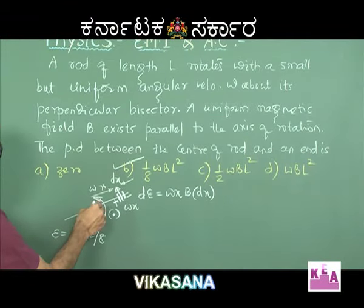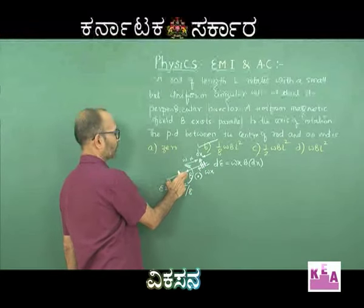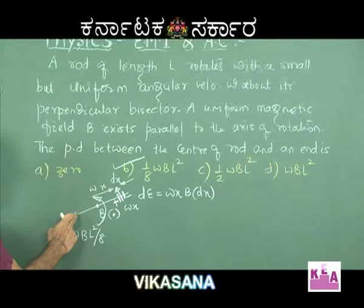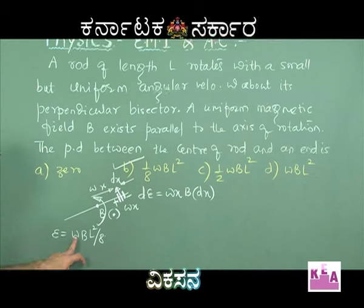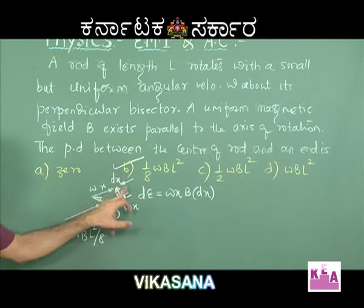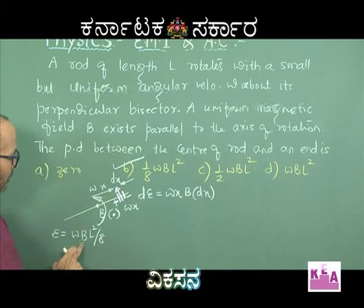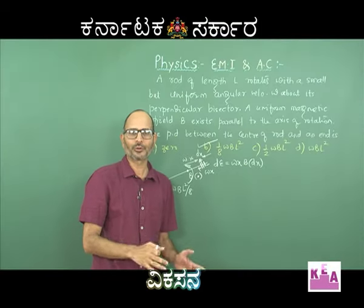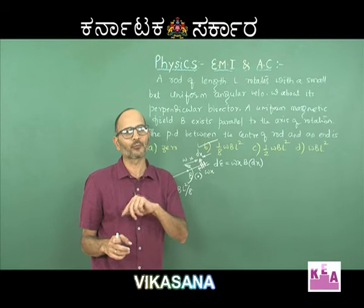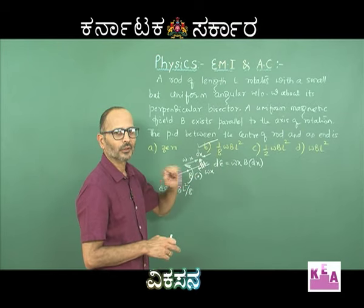Why would the end-to-end potential difference be 0? Because everything discussed on one side of the axis for half the rod applies equally to the other half. An element on the other side also has omega·B·L²/8 EMF but with a negative sign at that end. So both ends of the rod are at the same (negative) potential — there is only a potential difference between the center and an end, not between the two ends. I hope you enjoyed this problem.